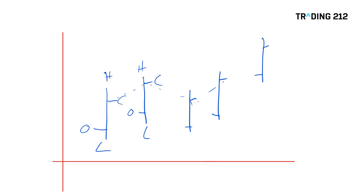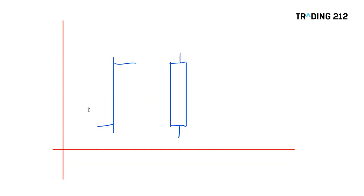Candlestick charts use the same data, they're just shown slightly differently. So here's a bar chart next to a candlestick — it's the same data, the same day. On the bar we have the open, the close, the high and the low. On the candlestick, what we're doing is actually just blocking in the difference between the open and the close. We still have the high and the low — these are the wicks, or technically called the shadows on the candlestick — but it's the difference between the open and the close that's considered important.